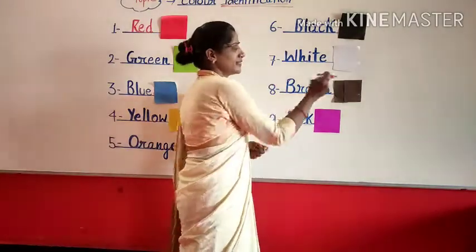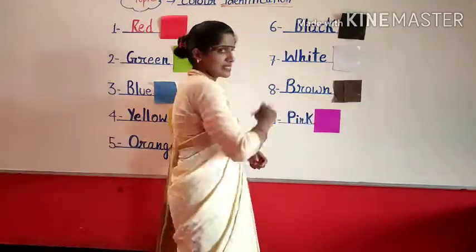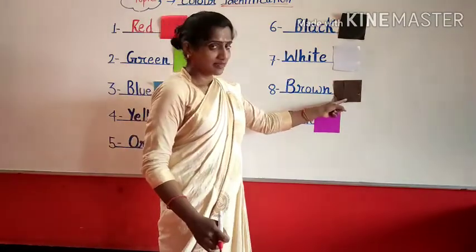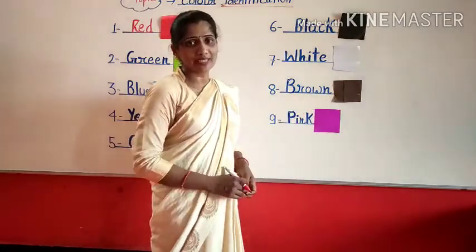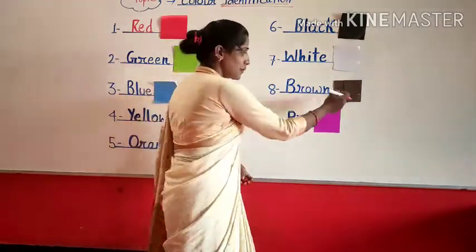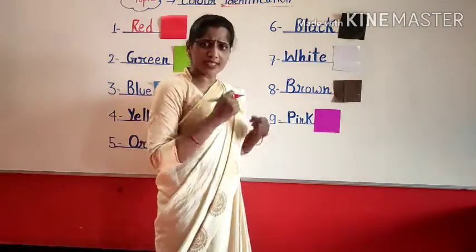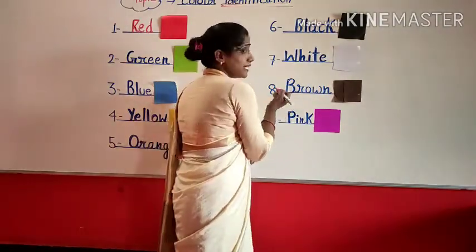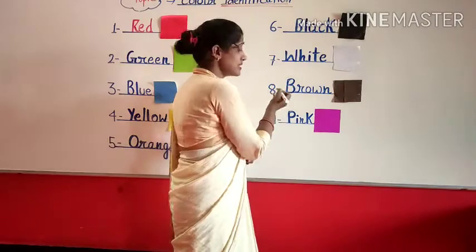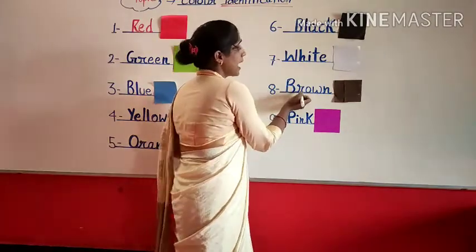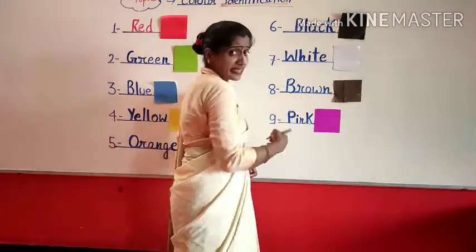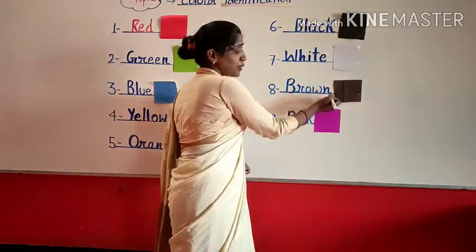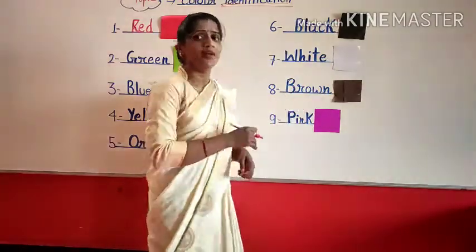Come to the next color. Which color is this? This is brown. And what is the spelling of brown? Spelling of brown is B-R-O-W-N. B-R-O-W-N. Brown.